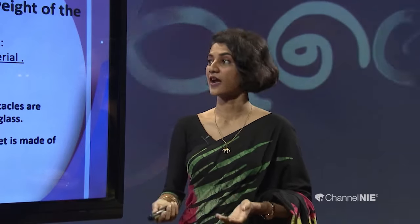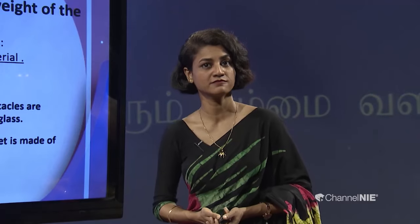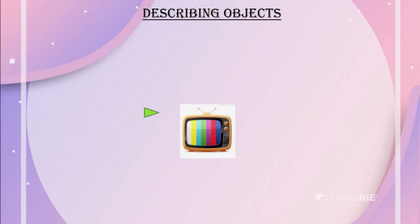When you want to describe the material of the object, you can follow this simple sentence pattern. When it comes to describing objects, you will learn that we can describe about the size, the color, the shape, and the material. Now, what you can see is there is a television in the middle of the screen.